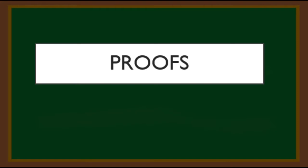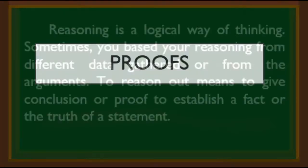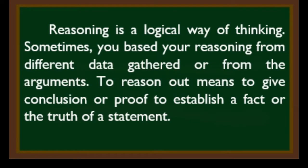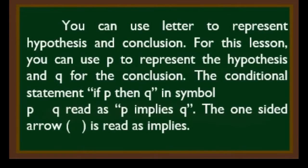The lesson we will discuss is about proofs. Reasoning is a logical way of thinking. You base your reasoning from different data gathered or from arguments. To reason out means to give a conclusion or proof to establish a fact or the truth of a statement. You can use letters to represent hypothesis and conclusion — P for the hypothesis and Q for the conclusion.